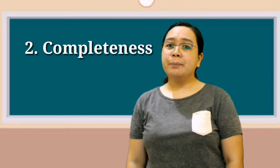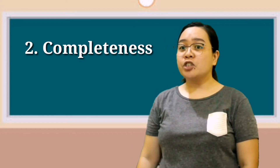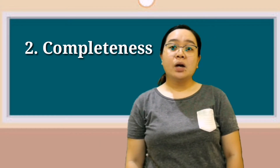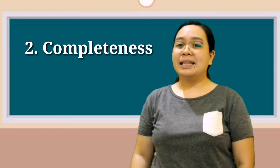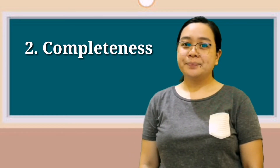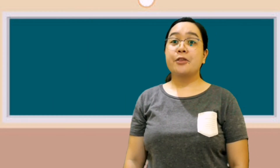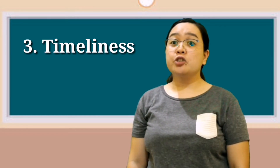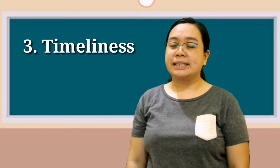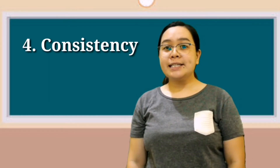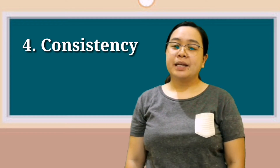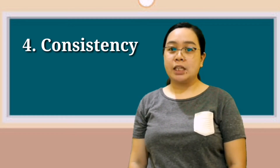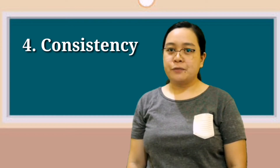It should be able to answer the WH questions like what, who, when, where, why, and how. Third, timeliness — information should be up to date. Fourth, consistency — information should be consistent for it to be considered accurate and useful.